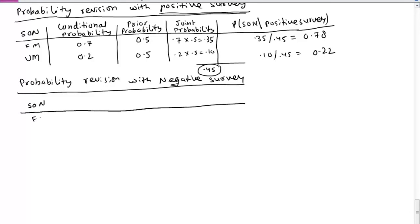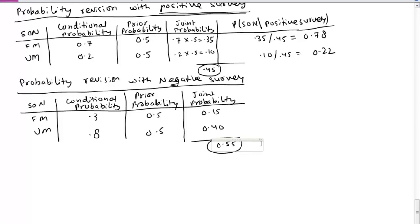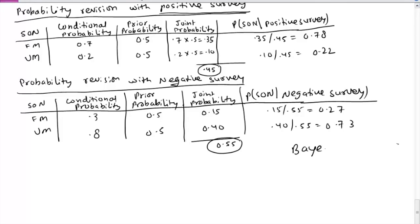We can do the same thing for negative survey. Similar format. So I am still using data from the first table. So basically we have revised the probabilities for both positive and negative survey. And this method is a very standard method for whatever we have done. This is called Bayes' theorem. Basically we have used Bayes' theorem to revise these probabilities.